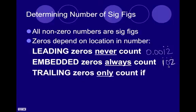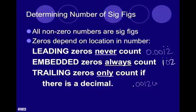Trailing zeros, there are qualifications. If there's a decimal, then zeros at the end of a number count. So, if we had .0012, and let's say we threw a zero on there, this is a trailing zero. There is a decimal. These two zeros, they're leading, so they don't count. So, we go one, two, three. He counts.